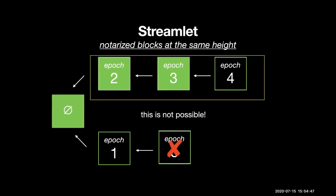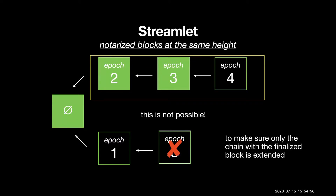To make sure the protocol only finalizes the longest chain, any new blocks added should extend the finalized chain and not extend competing forks. That is why the finalization rule ensures there is no block at the same height as the last finalized block. We'll look at the consistency and finalization rules which ensure that.